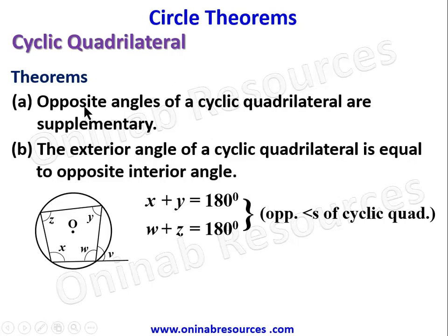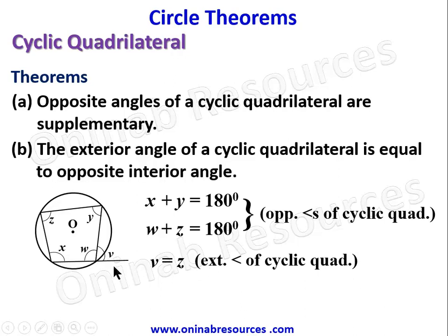For the second theorem, V is an exterior angle and it is opposite to Z as the interior angle, so we say V equals Z. That is, the exterior angle of a cyclic quadrilateral equals the opposite interior angle. This is the diagrammatic explanation of the two theorems.